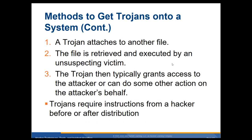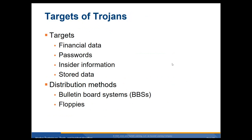Methods to get a Trojan onto a system: you build the Trojan horse and wrap the Trojan into another program so it looks legitimate. The file is retrieved and executed by the unsuspecting victim — you could send them a link via email or Facebook. The Trojan then typically grants access to the attacker or performs some other action on the attacker's behalf. Trojans require instructions from the hacker, so once it's on your machine it isn't doing anything until the hacker tells it to.